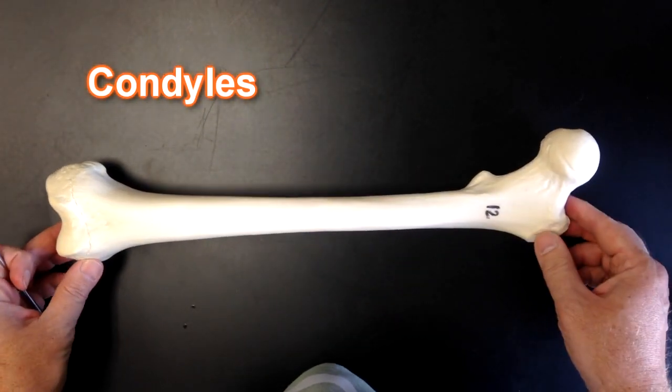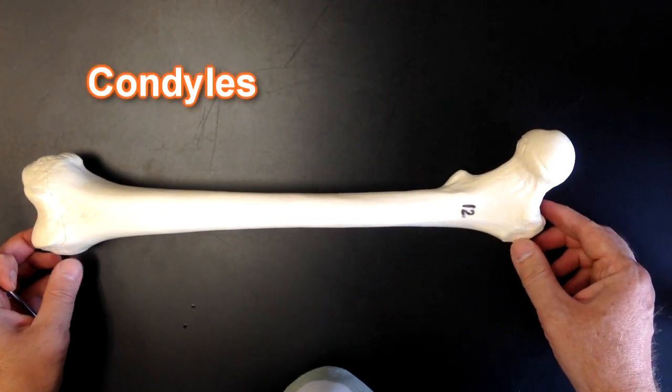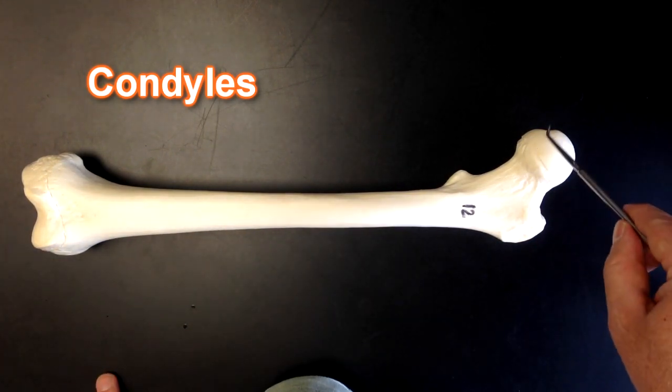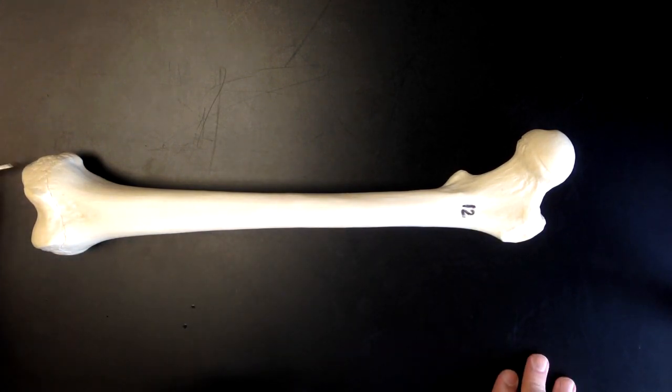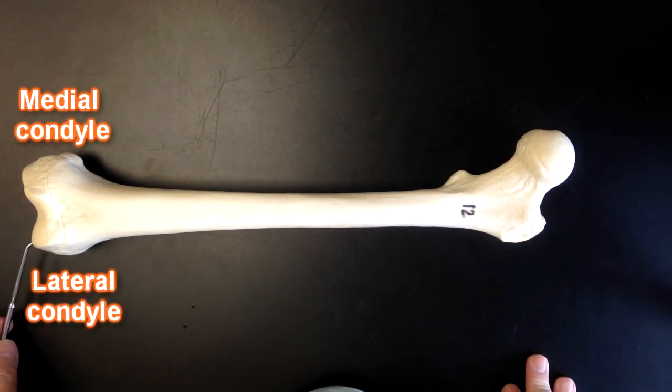The medial condyle is going to be located on the medial side, okay, so we can use our head as a landmark to help us identify medial. So this is medial condyle down here and this is lateral condyle.